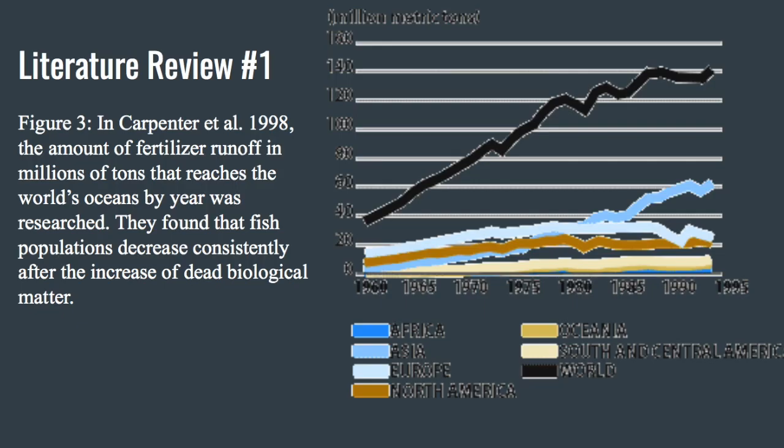In Carpenter et al. 1998, it was found that the use of fertilizer and other nitrate and phosphate-rich sources directly led to the increase in algae bloom occurrences around the United States and the rest of the world. These algae blooms have been found to kill off large numbers of fish after they die because the BOD, or biological oxygen demand, drastically increases.